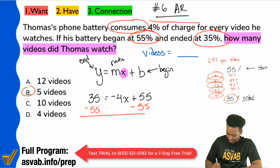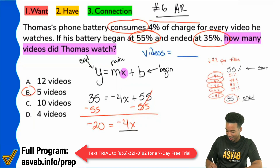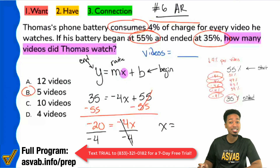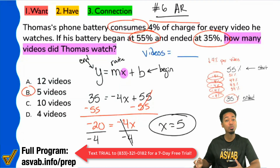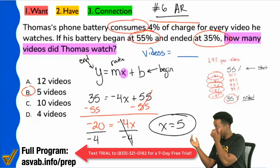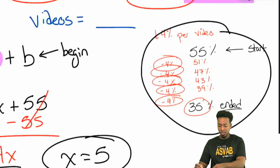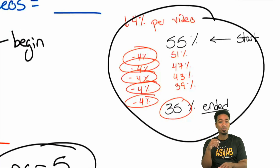Subtract 55 from both sides. That's going to give us negative 20 equals negative 4x. Don't be afraid of negatives — all you have to do is divide both sides by negative 4. And we have x equals — negative divided by negative is positive — 20 divided by 4 is 5. Same answer, but notice how this is a much more straightforward way, because we didn't have to count down by 4% until we got the actual answer.